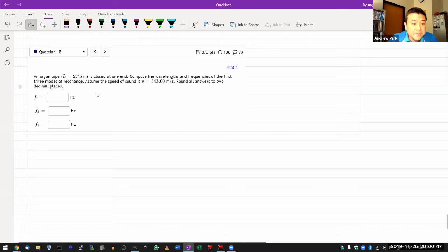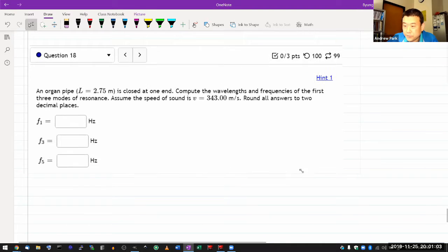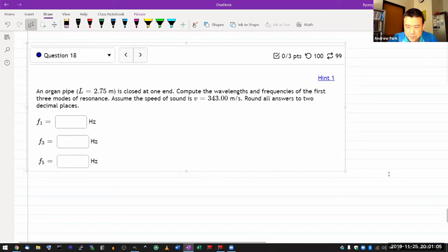It says organ pipe is closed at one end, compute the wavelength and frequencies of the first three modes of resonance. I did this at the beginning of the lab, but it's worth doing it on recording, especially for the benefit of those of you who weren't in the lab.